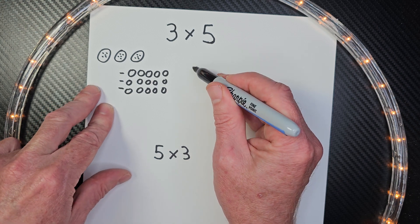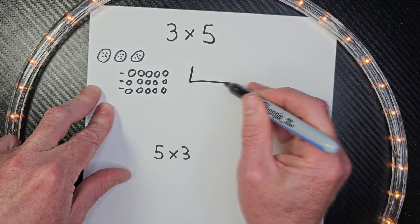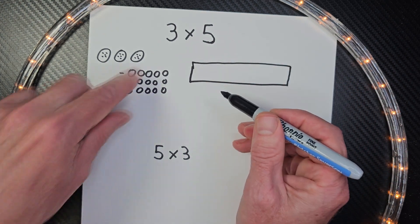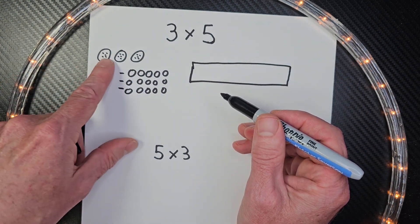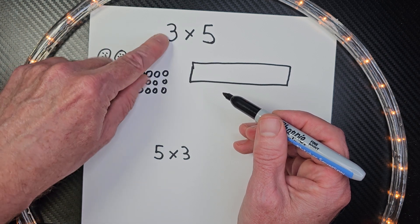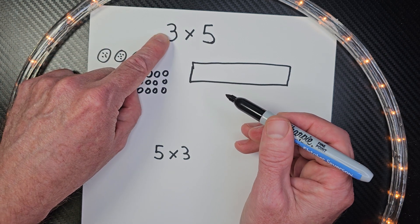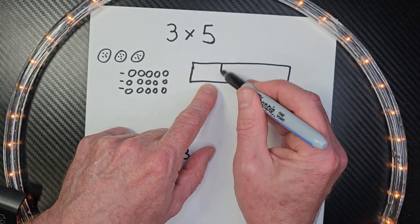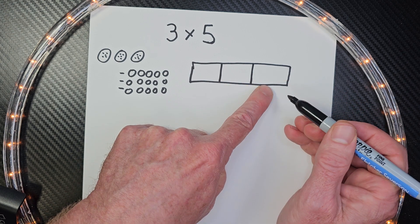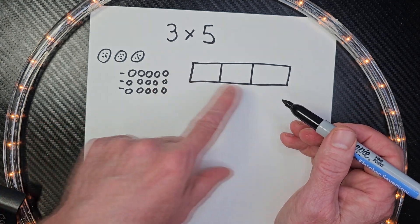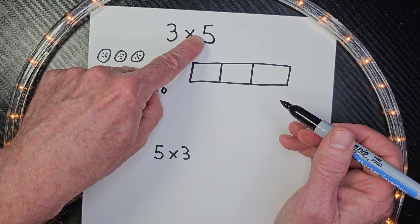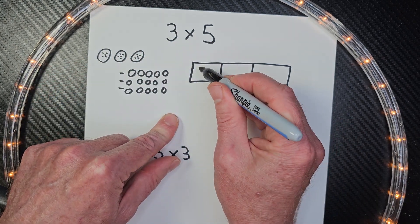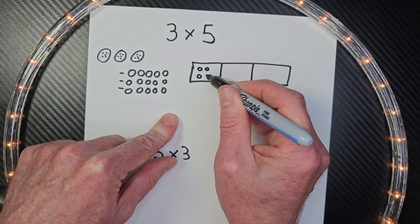A tape diagram is basically a long rectangle, just like this. And I need to treat it like I do an array or when I'm making my drawings. I need three groups, so I need to divide this rectangle into three groups — one, two, three. Inside each of these groups will be my five. Sometimes you can put a number in there, or you can just put five circles. It's totally up to you.